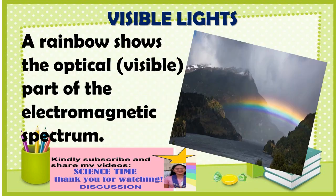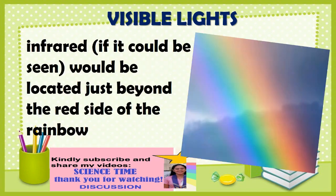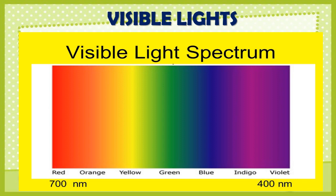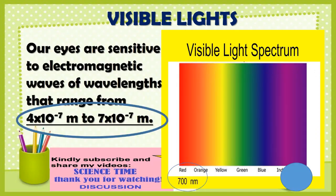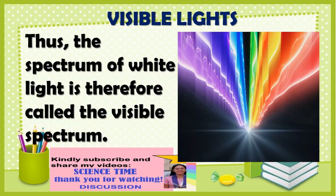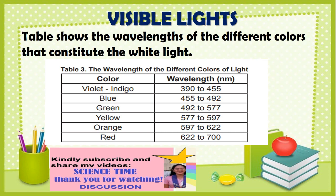A rainbow shows the optical, visible part of the electromagnetic spectrum. If infrared could be seen, it would be located just beyond the red side of the rainbow, with ultraviolet appearing just beyond the violet end. Our eyes are sensitive to electromagnetic waves within a specific range of wavelengths — this is the visible spectrum. The spectrum of white light is therefore called the visible spectrum, and a table shows the wavelengths of the different colors that constitute white light.